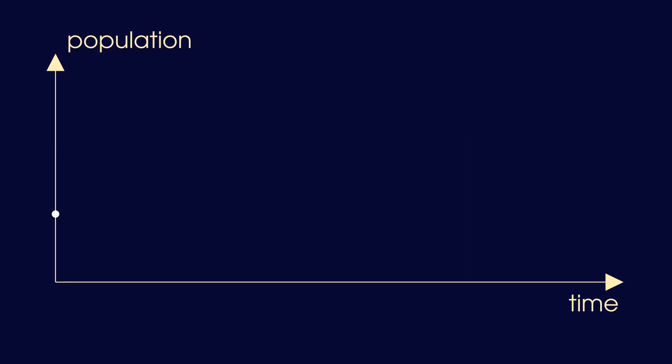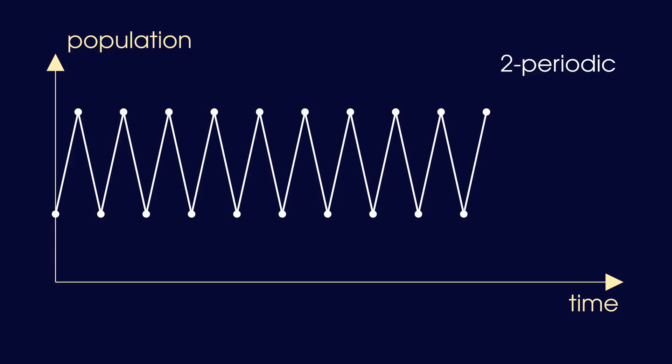There is also an initial population size which leads to a different number the next year, but the same as what we started with the year after. The pattern repeats itself every two years, and we say that such a solution has period 2, or that it is two-periodic.